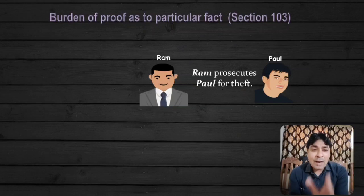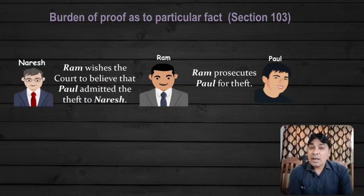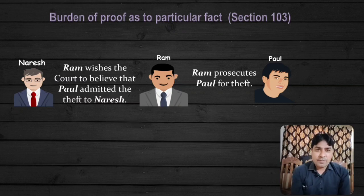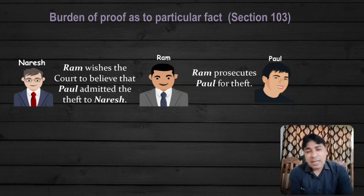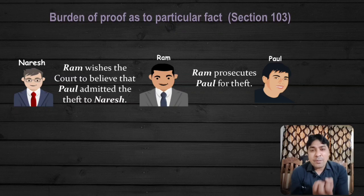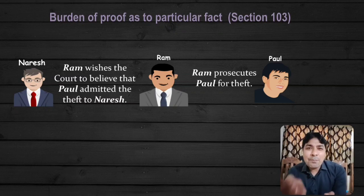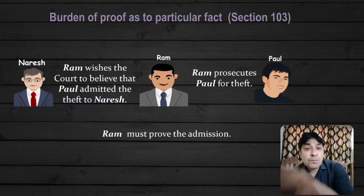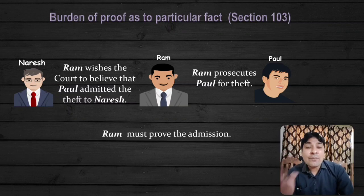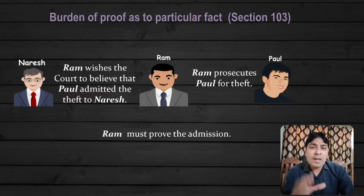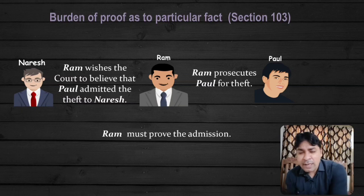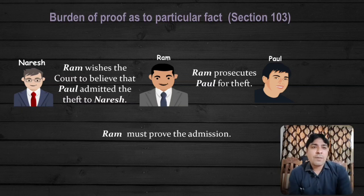Here is an example: Ram prosecutes Paul for theft. Ram wishes the court to believe that Paul admitted the theft to Naresh. Ram chahta tha ki court is par bharosa kare ki Paul ne Naresh ke saamne uski chori ka gunah kabool kiya. Ram must prove the admission — Ram ko woh confession ya admission prove karna padega. Ram ko yeh prove karna padega ki Paul has confessed his guilt before Naresh — kyunki Ram yeh particular fact court ke saamne rakh raha hai.